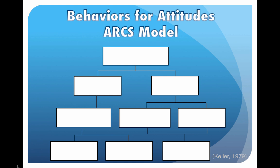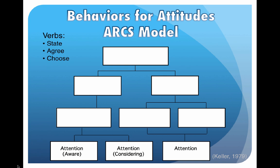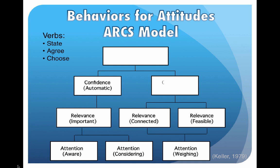Next, we look at behaviors for attitudes using Keller's ARCS model. Verbs you might use include state, agree, or choose — implying you'll probably do a survey or watch people's behaviors. The ARCS model starts with attention at the bottom — being aware, considering, or weighing. Next is relevance: is it important or connected to you? Confidence is the next level up, and once achieved, the behavior becomes automatic and spontaneous. Last and most important is satisfaction — where you become a role model. For example, with seatbelt safety, it's not enough to just know about it; it needs to become automatic, and eventually you become someone who tells everyone to buckle up.